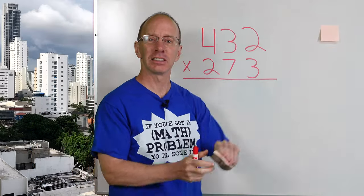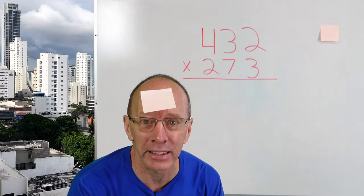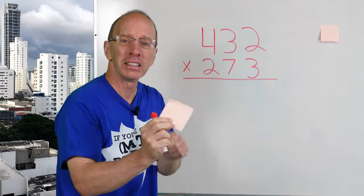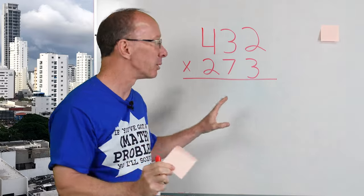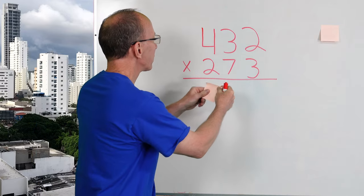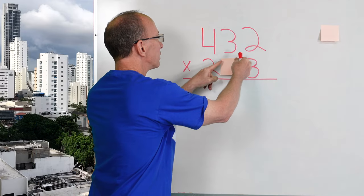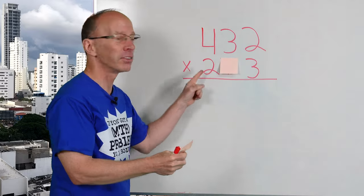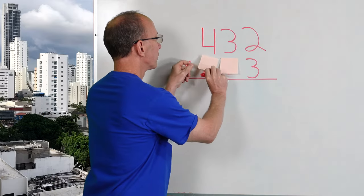So what I have right here is some sticky notes. You can see right there, they are sticky. These will cover things up and I'm going to cover up some scary numbers to make this look a little more easy, cheesy, lemon squeezy. So I'm going to go ahead and I'm going to cover up the seven right there. And I'm going to go ahead and cover the two up right now.